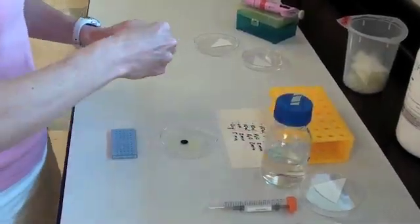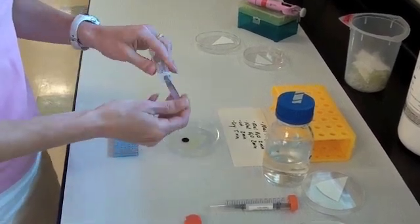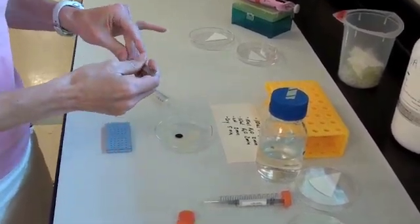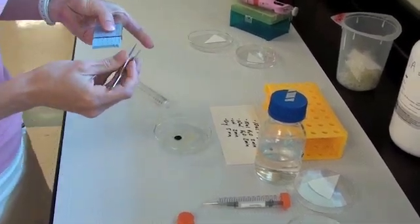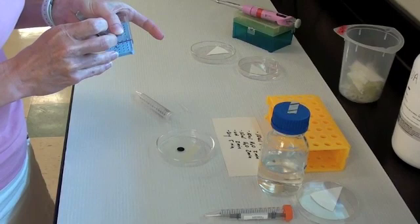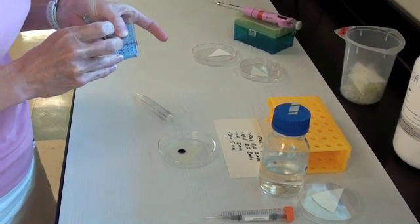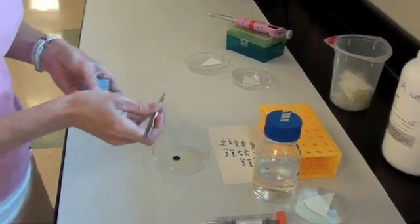When you arrive to lab, your station will look something like this. Here we'll watch as your instructor sets a TEM grid on the sticky black PELCO dot in the Petri dish. The forceps used in this work are specific for TEM work. They're very fine-tipped, and you can see that they're handled carefully and kept in containers.